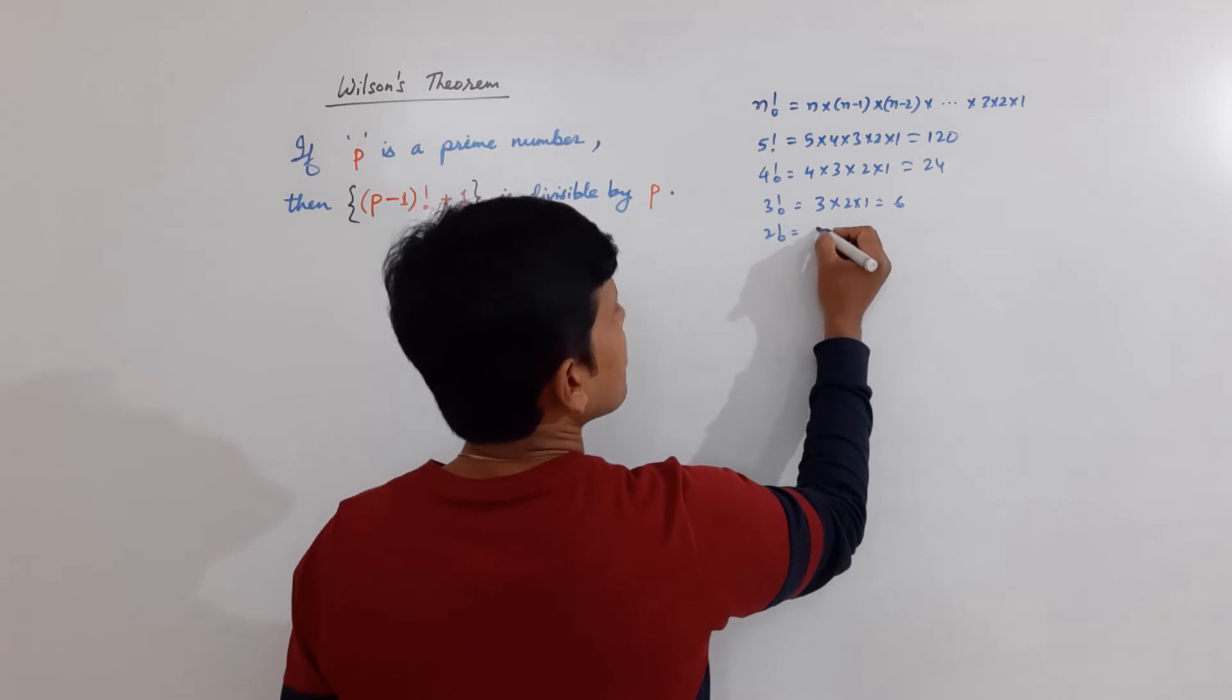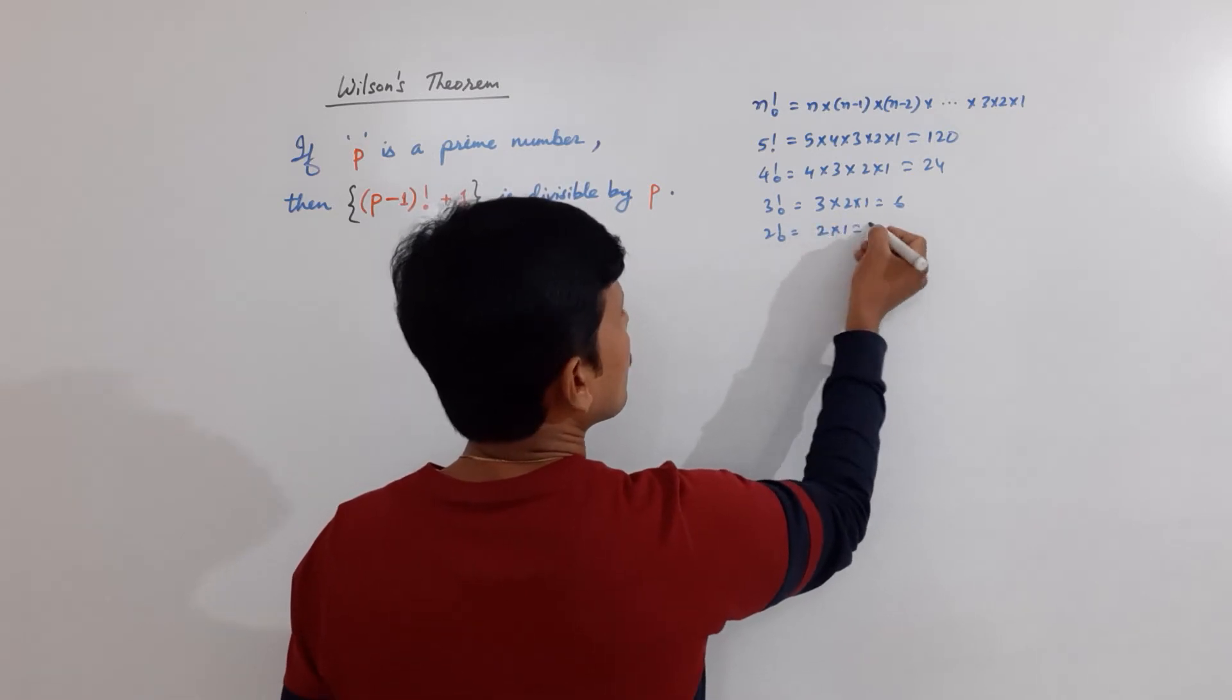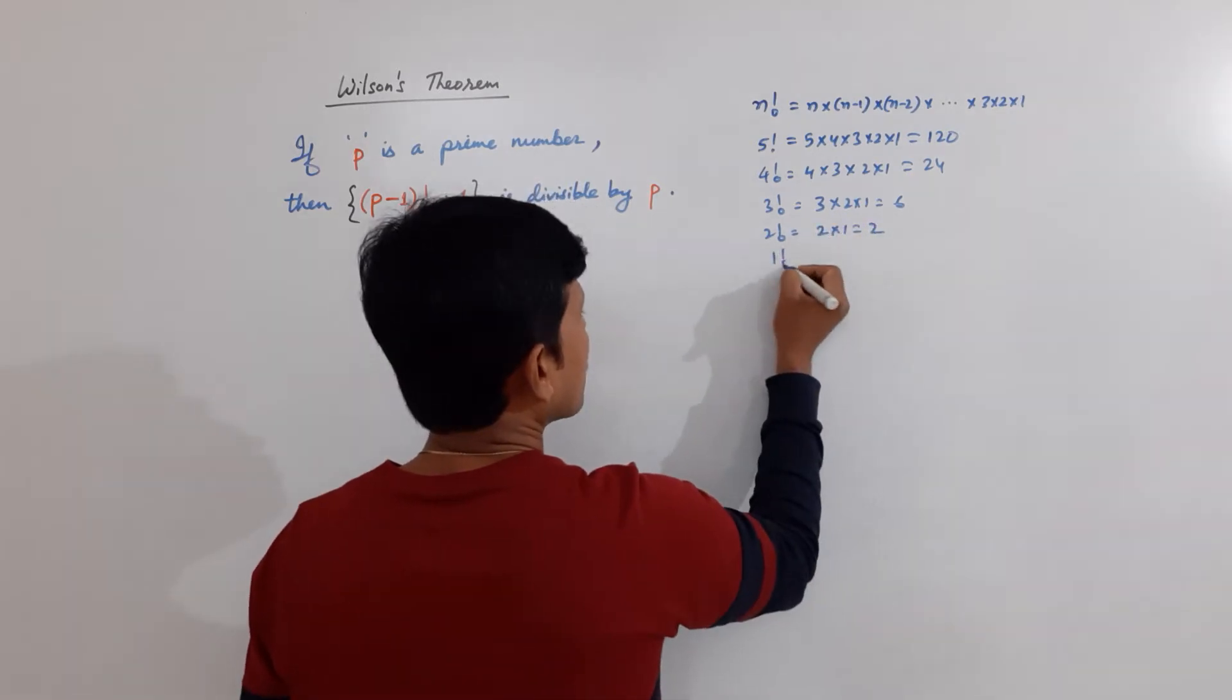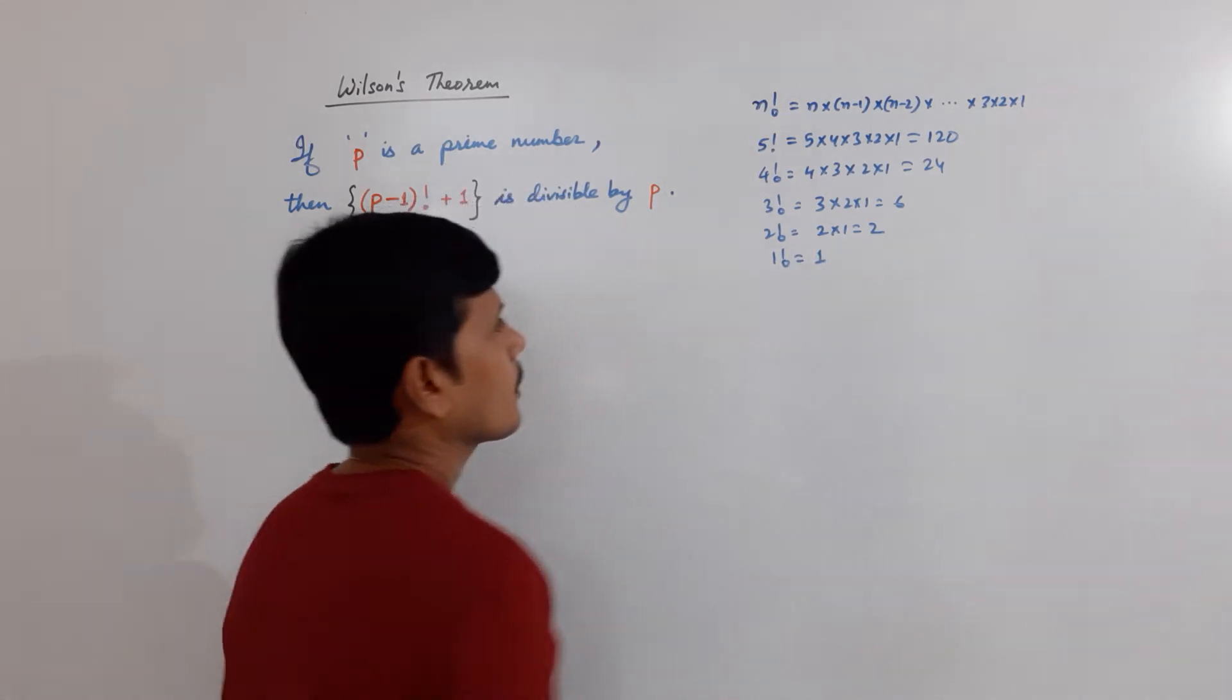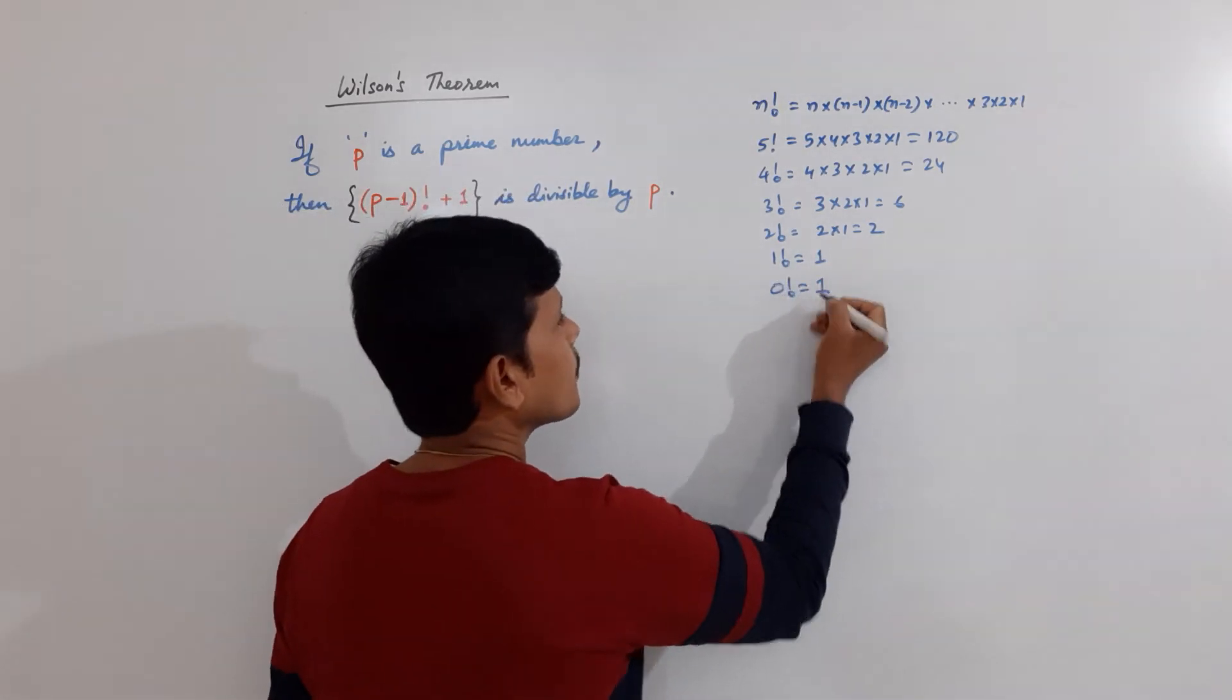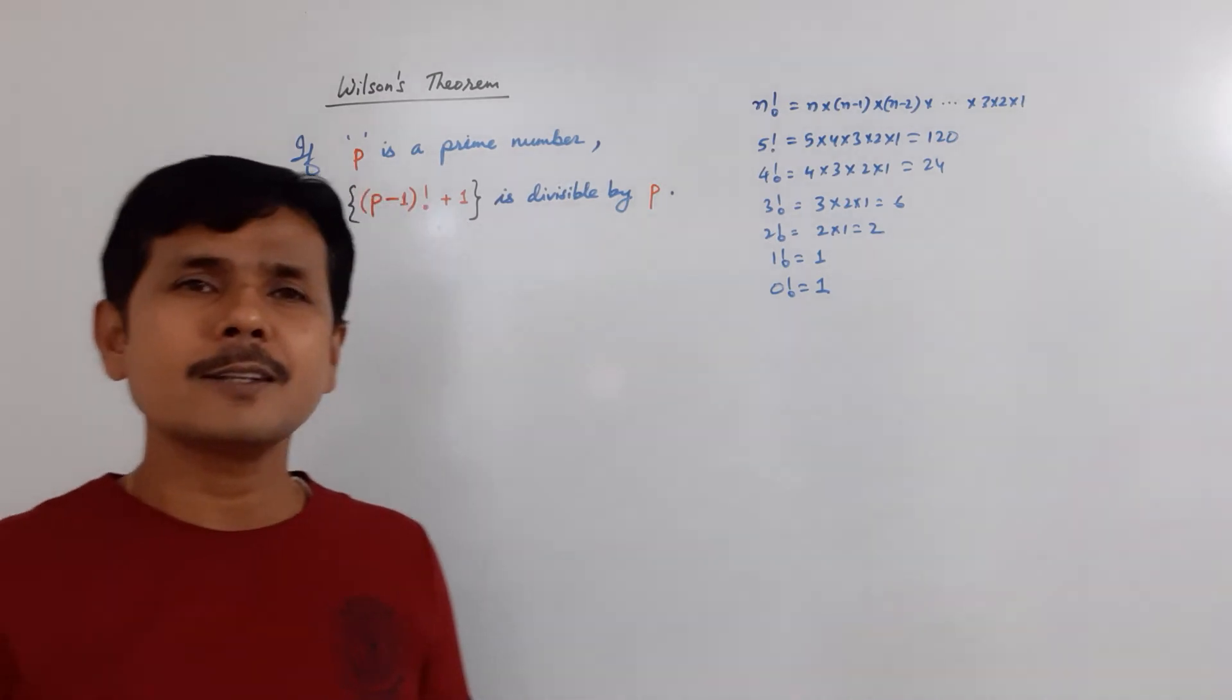Factorial of 2 is equal to 2 times 1 equal to 2. And factorial of 1 is equal to 1. And obviously, in the last, you might have seen my video in the shorts, 0 factorial is equal to 1.